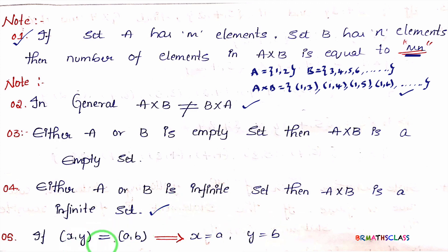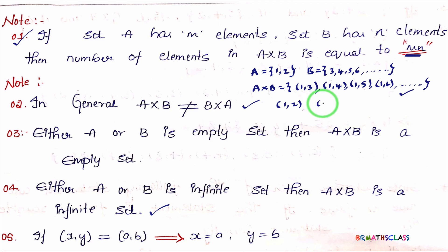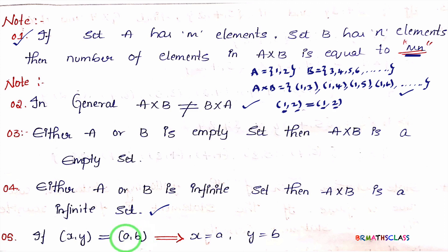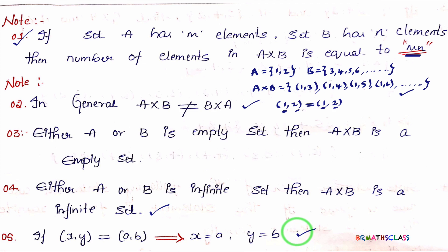Point 5: Two ordered pairs are equal when their x-coordinates are equal and their y-coordinates are equal. For example, 1 comma 2 and 2 comma 1 are not equal. Two ordered pairs x comma y and a comma b are equal only when x equals a and y equals b. Note these points carefully. With this, the theory part related to the first exercise is completed. In the next class, we will start solutions of Exercise 2.1.